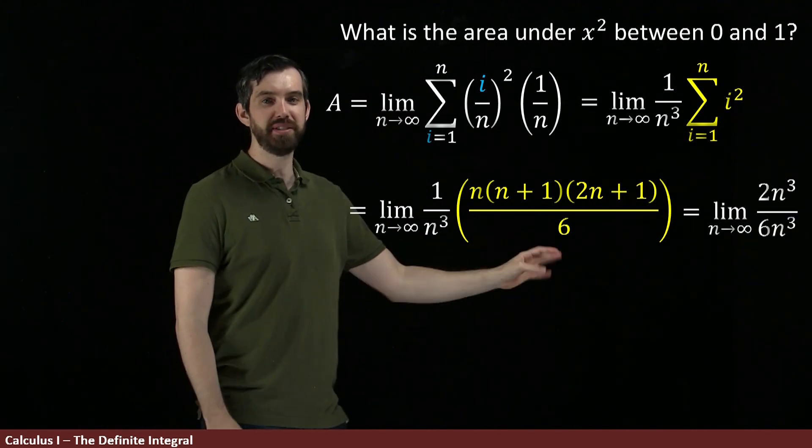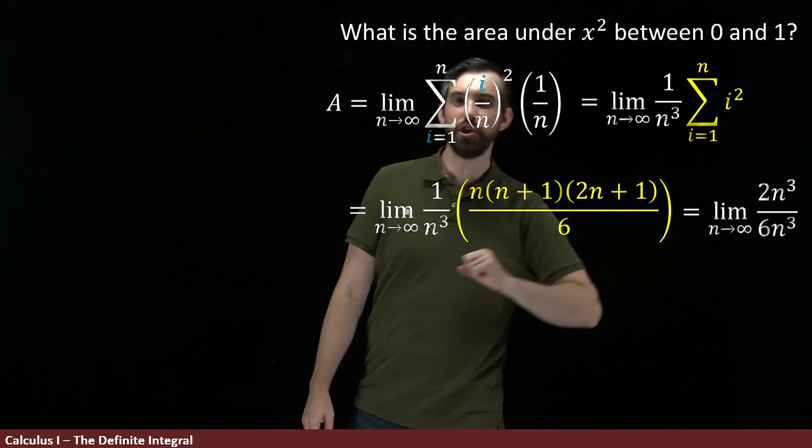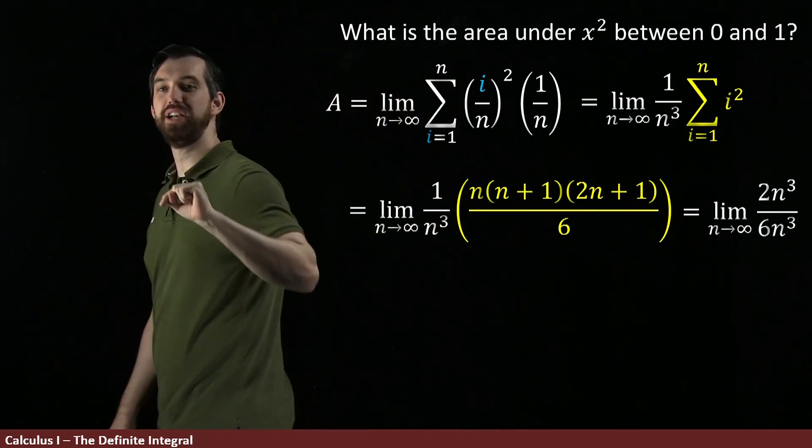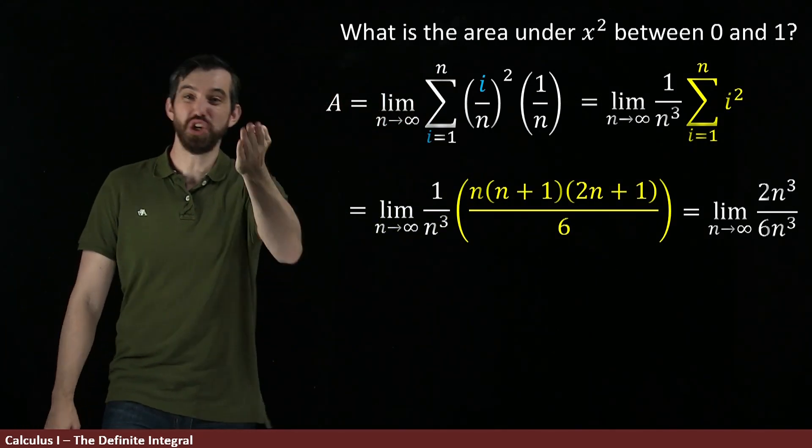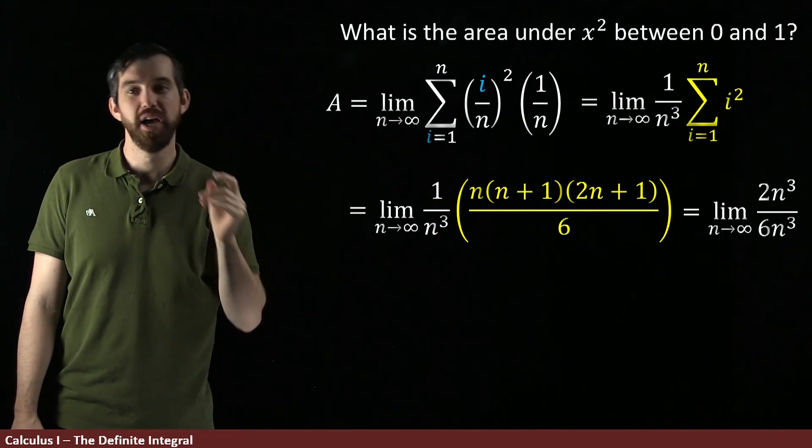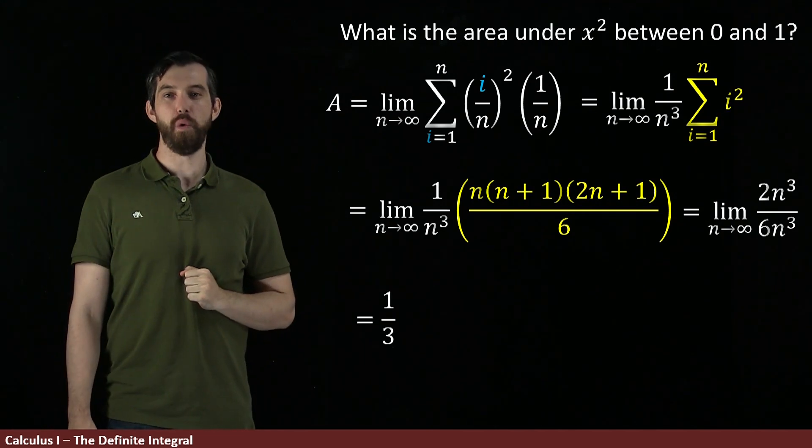This is the limit as n goes to infinity of 2n cubed on the top, 6n cubed on the bottom. My n cubed's are going to cancel. The 2 over 6, last time I checked, was just equal to the value of 1 third.